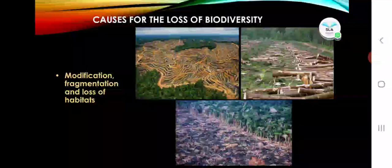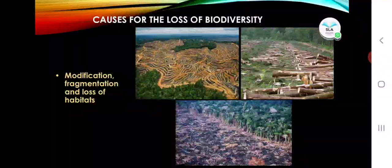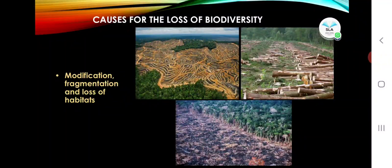Fragmentation of habitats is a compartmentalization of a continuous habitat into distinct zones. Fragmentation of a habitat often divides a large metapopulation into several small subpopulations — for example, populations of medicinal plants or wild animals — causing modification, fragmentation, and loss of habitats.